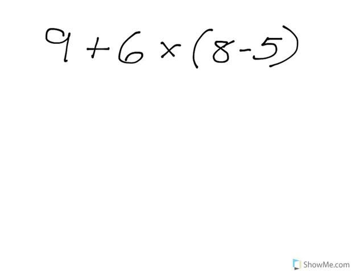And this time it is 9 plus 6 times 8 minus 5. So, again, we're going to write out our checklist. Please excuse my dear Aunt Sally. Got it right that time. So, of course, the first thing we're going to do is let's write the parentheses. So 8 minus 5 is 3. So rewrite your problem.